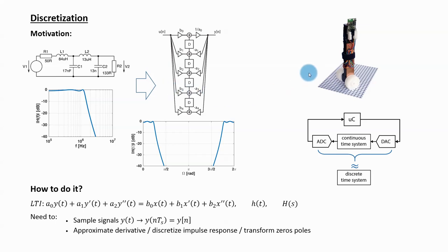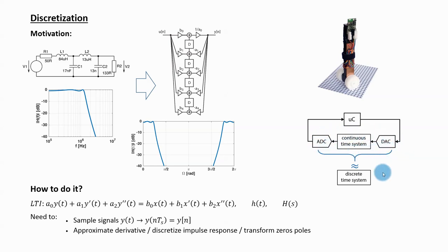I first design an analog filter with a desired frequency characteristic and then transform it into a discrete time filter while keeping the frequency characteristic. This transformation is called discretization. Another example is in control system design. Modern control systems are often digital and work in discrete time while they control continuous time analog systems. A trivial example is the inverse pendulum — a continuous time analog system controlled by a microcontroller, which is a digital discrete time system.